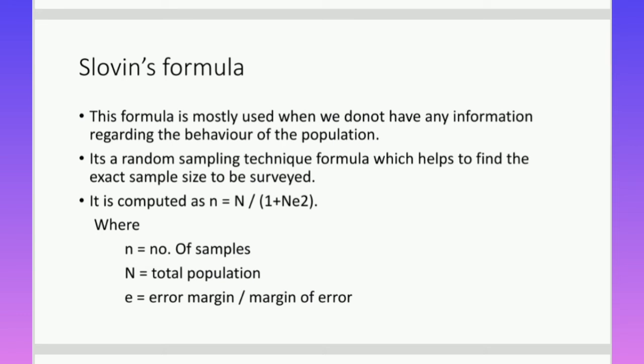It is computed as: n = N / (1 + Ne²), where capital N is the total population, small n is the number of samples that we need to find for survey, and e is the error margin or margin of error.